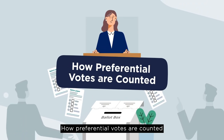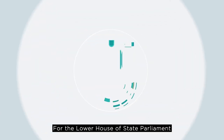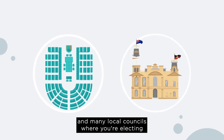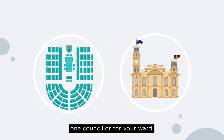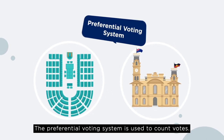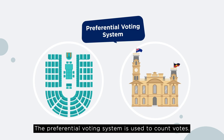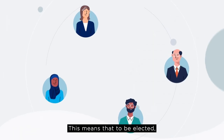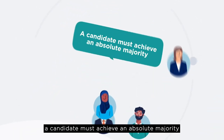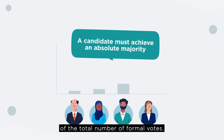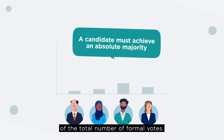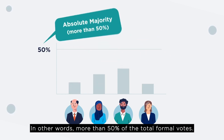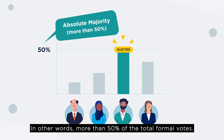How preferential votes are counted. For the lower house of state parliament and many local councils where you're electing one councillor for your ward, the preferential voting system is used to count votes. This means that to be elected, a candidate must achieve an absolute majority of the total number of formal votes — in other words, more than 50% of the total formal votes.